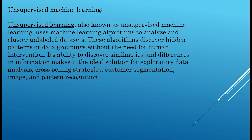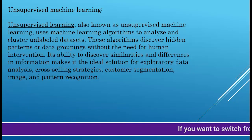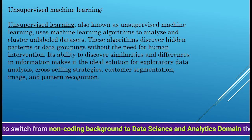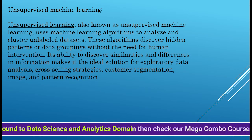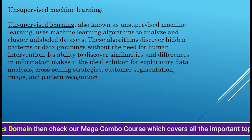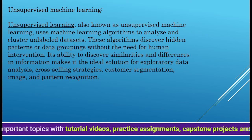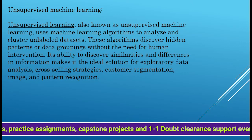The second type of machine learning is unsupervised machine learning, which is used for unlabeled data sets. It is used for clustering and discovering actual patterns in the data. These algorithms discover hidden patterns or data groupings without the need for human intervention, making it ideal for exploratory data analysis, cross-selling strategies, customer segmentation, and image and pattern recognition.